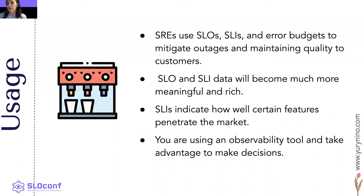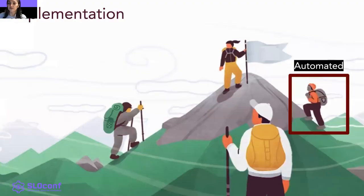About usage: once SLOs and SLAs go live, they are used to mitigate outages while pursuing rapid release of features or fixes, thereby maintaining higher standards of software delivery quality to customers. With SLO and SLA metrics in place, all stakeholders have a framework for gathering and monitoring performance data on new features. SLO and SLA data will become much more meaningful and rich, and SLAs indicate how well certain features penetrate the market. You are using an observability tool and taking advantage of it for making decisions.